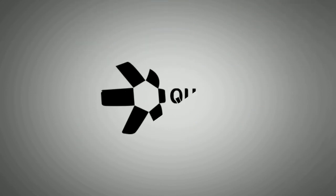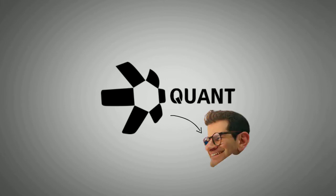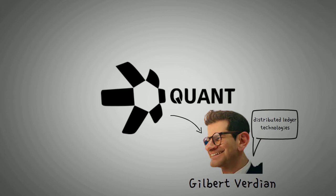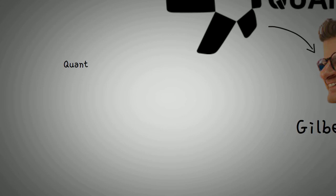Quant Network was founded in 2015 by Gilbert Verdian when he discovered how useful distributed ledger technologies, also known as DLT, could be in solving the problems he was personally facing. So what is Quant?